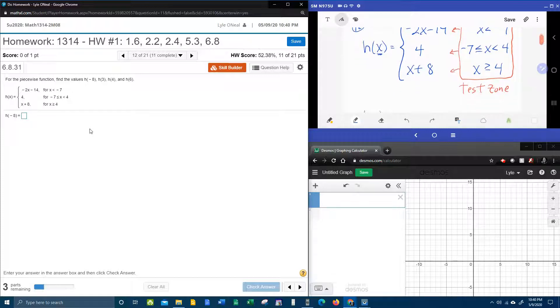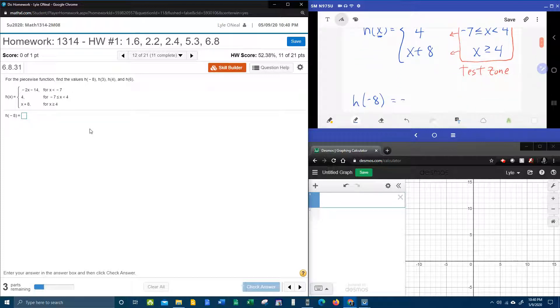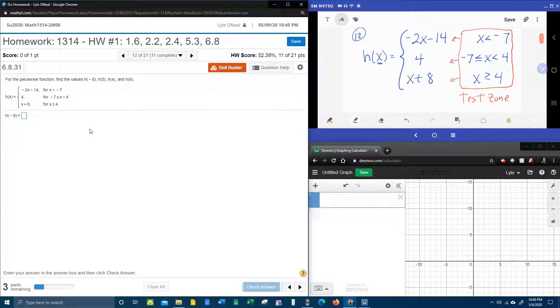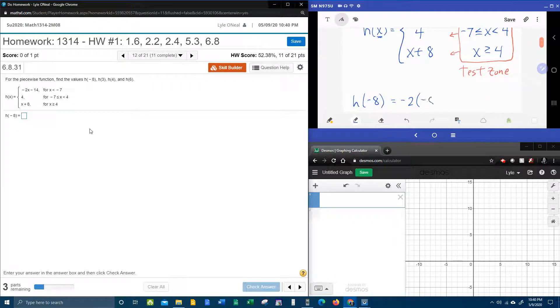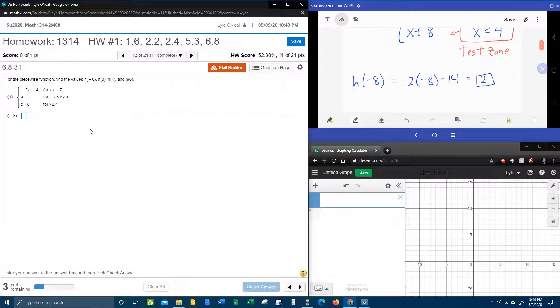So we're going to take negative eight and we're going to plug it in for x into the top piece. And then we're going to work that out. Negative times a negative, that's a plus 16. 16 minus 14 is 2. One down, three to go.